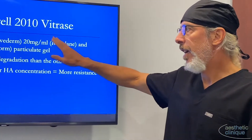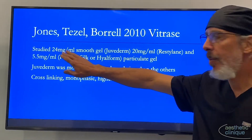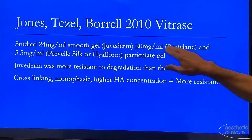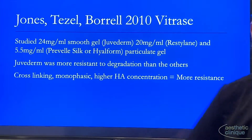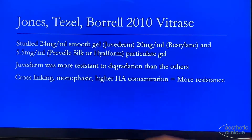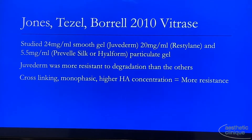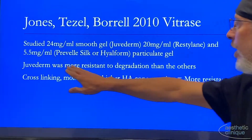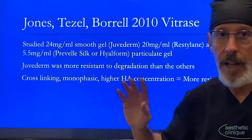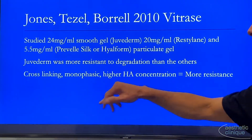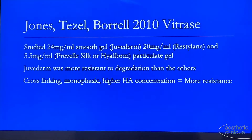Using Vitrase, they studied a smooth gel of 24 mg/mL (Juvederm) versus Restylane, and one at 5.5 mg/mL (Prevail Silic or Hyloform, no longer available in the US — this was 2010). They found Juvederm was more resistant to degradation than all others, and again suggested that cross-linking, monophasic nature, and higher HA concentration contributed to greater resistance.